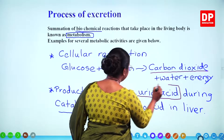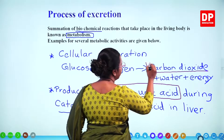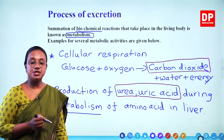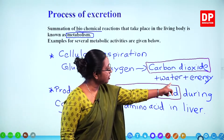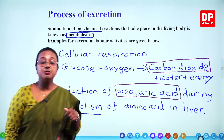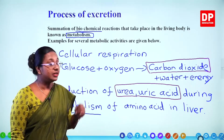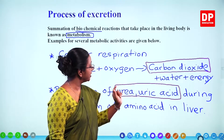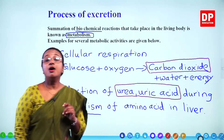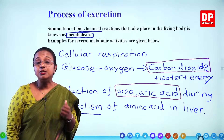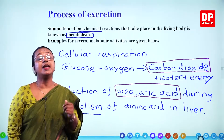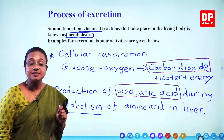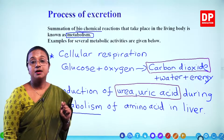Urea, uric acid, and carbon dioxide produced during cellular respiration are examples. Water is produced too, but water is not harmful to the body. However, we cannot have carbon dioxide, urea, or uric acid accumulating in the body — they have to be excreted out. These are the substances known as excretory substances.